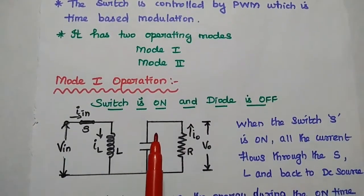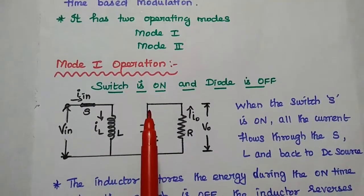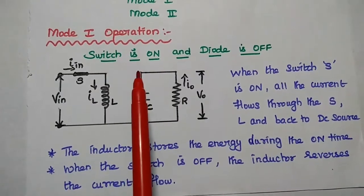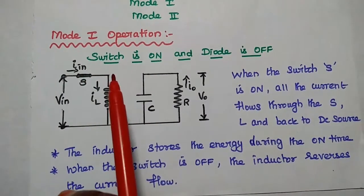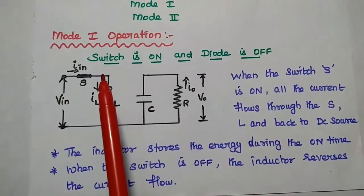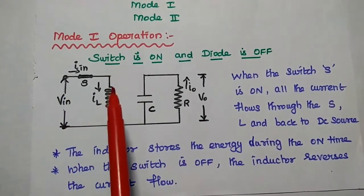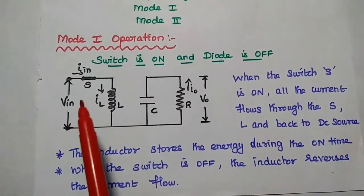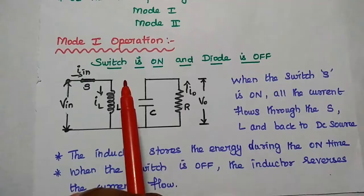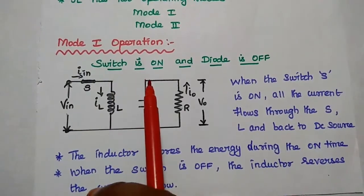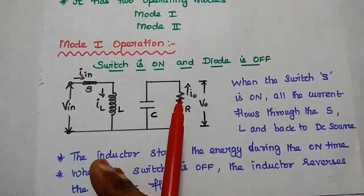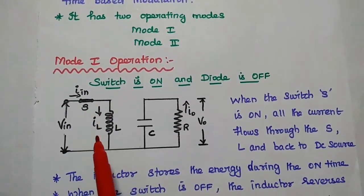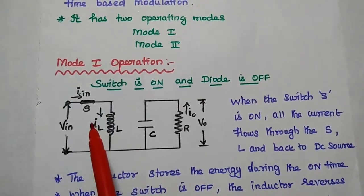The converter has two operating modes: Mode 1 operation and Mode 2 operation. In Mode 1 operation, the switch is ON and the diode is OFF. Under this condition, all the current flows through the inductor and back to the DC source. Since the diode is OFF, there is no current flow on the output side. When the switch is ON, the current flowing through the inductor is represented as I_L.